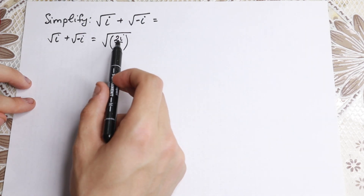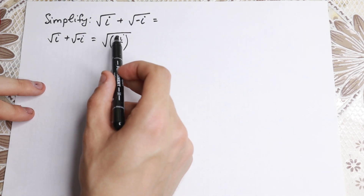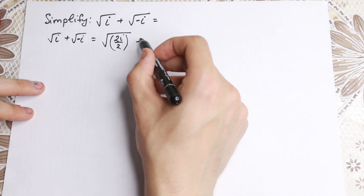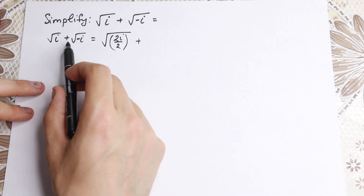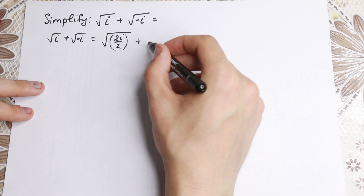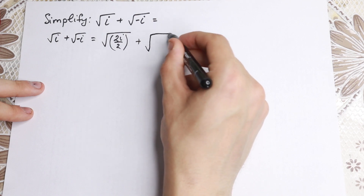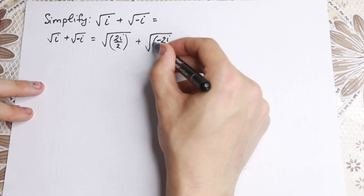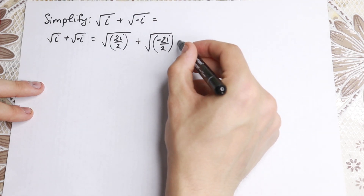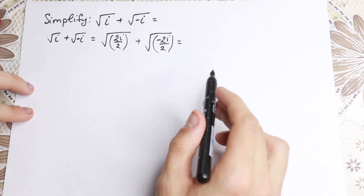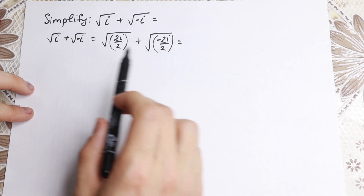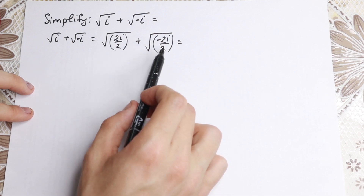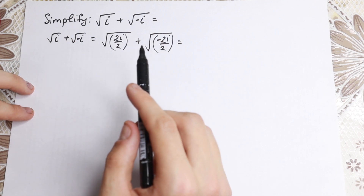We just write it as 2i over 2, and we can easily cancel — we will have the same result. And if we write the second element using this same approach, we get the square root of minus 2i over 2. So we just write both terms as 2i over 2 and minus 2i over 2 — the same as before.